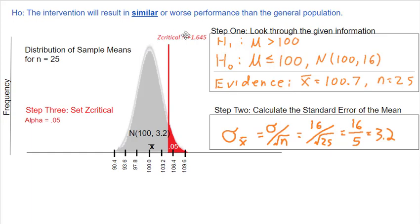Then we set our Z critical so that our alpha level is 0.05. For this one-tailed test, the Z critical is positive 1.645. The portion of the distribution to the right of that is 0.05 — so if the null hypothesis is correct, 5% of the time we'll get a sample mean that falls in our reject zone.